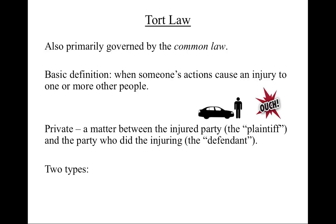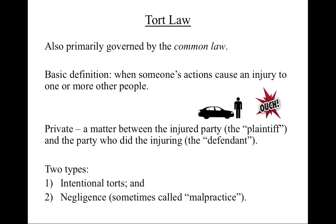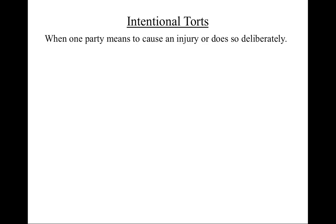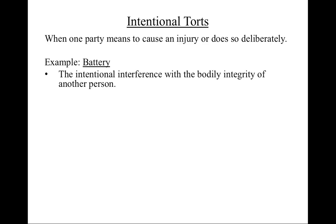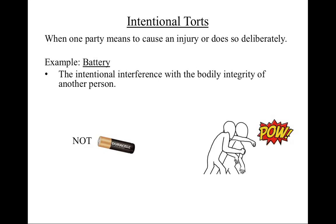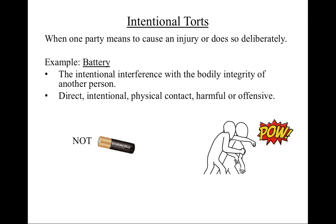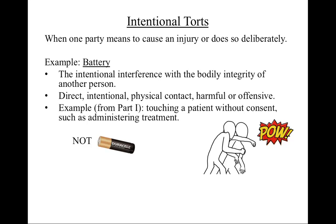We'll briefly outline two types of torts. First, intentional torts, and then negligence, which in the medical context is often called malpractice. An intentional tort is when one person does something deliberately which causes harm to another person, or that they mean to cause injury to another person. A good example is the tort of battery — a battery is the intentional interference with the body of another person. The courts have set out four requirements: the conduct must be direct, meaning aimed at the victim; intentional, meaning deliberate; must involve physical contact; and must be harmful or offensive to the reasonable person. An example in the medical context would be touching a patient without consent, such as administering an examination or an injection without patient permission.